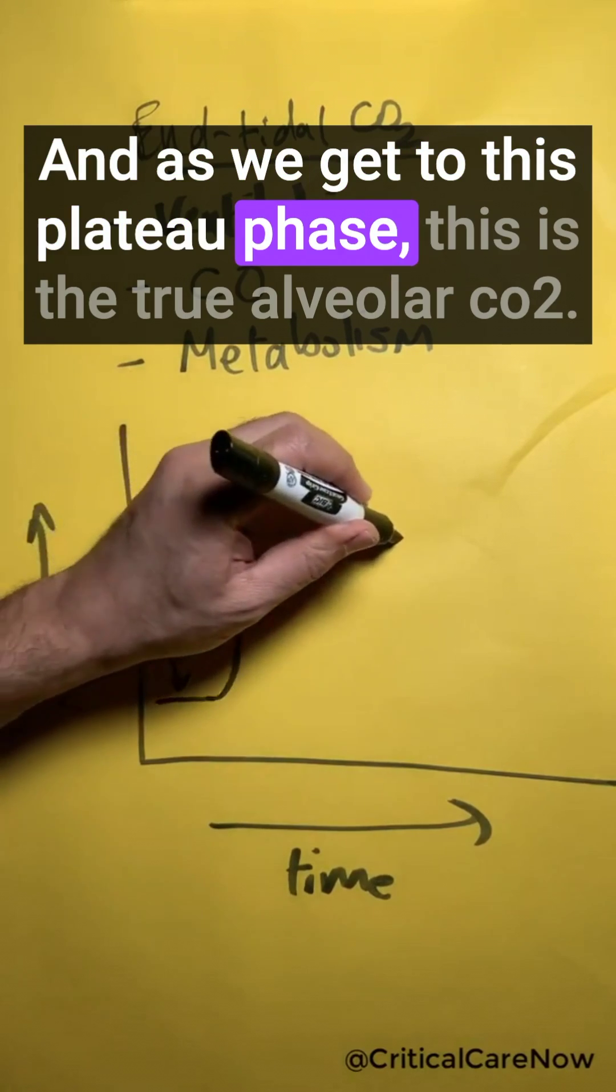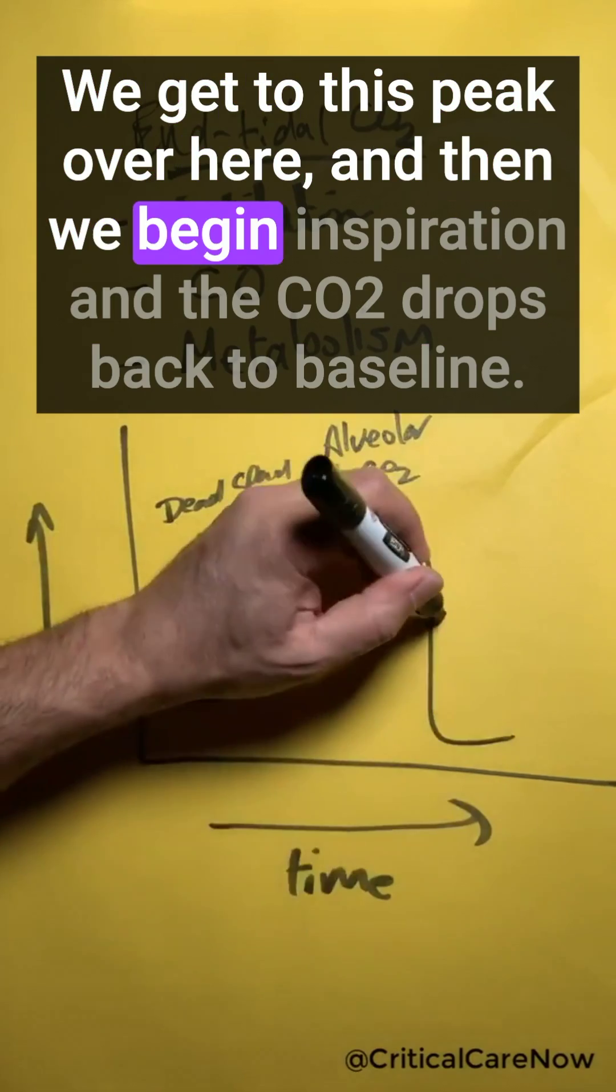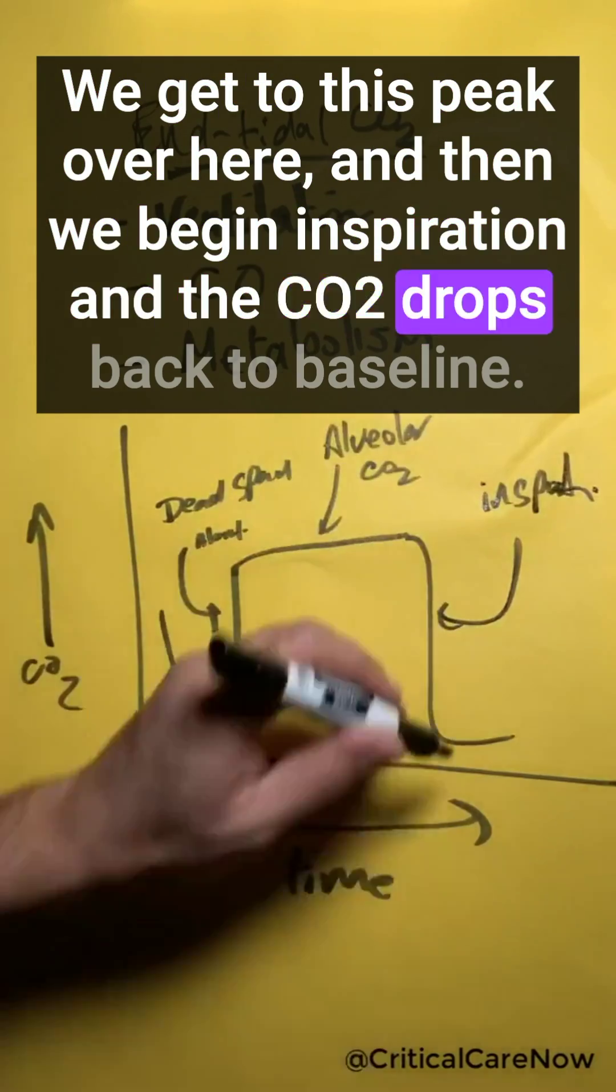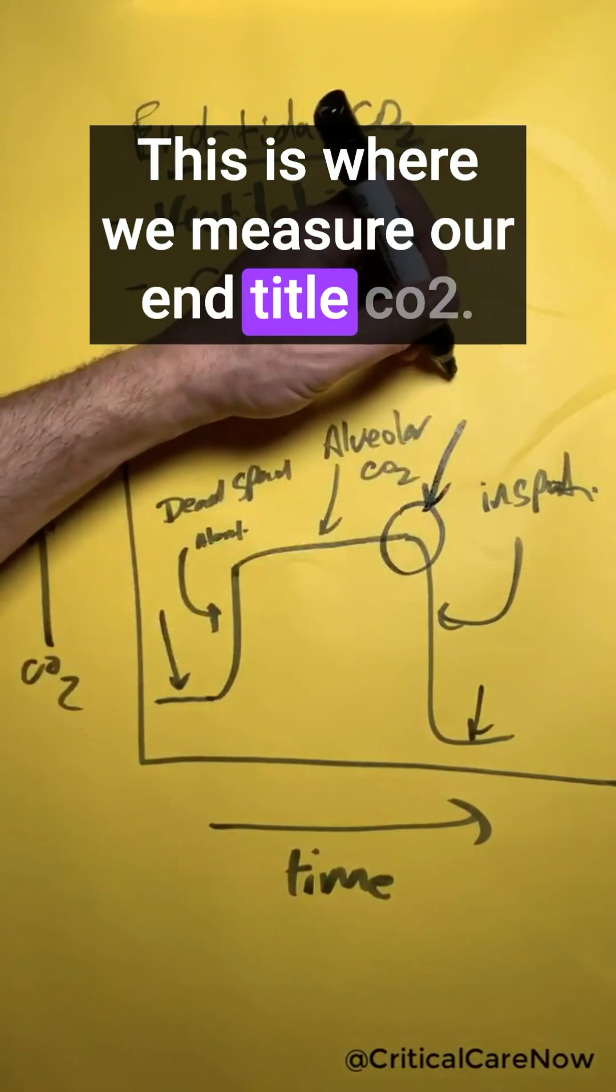And as we get to this plateau phase, this is the true alveolar CO2. We get to this peak over here and then we begin inspiration and the CO2 drops back to baseline. This is where we measure our end-tidal CO2.